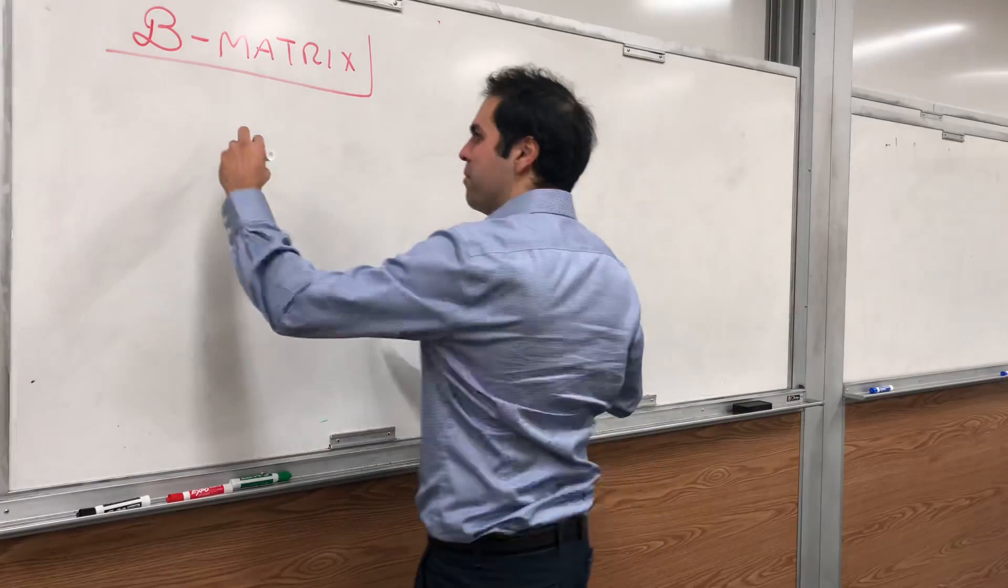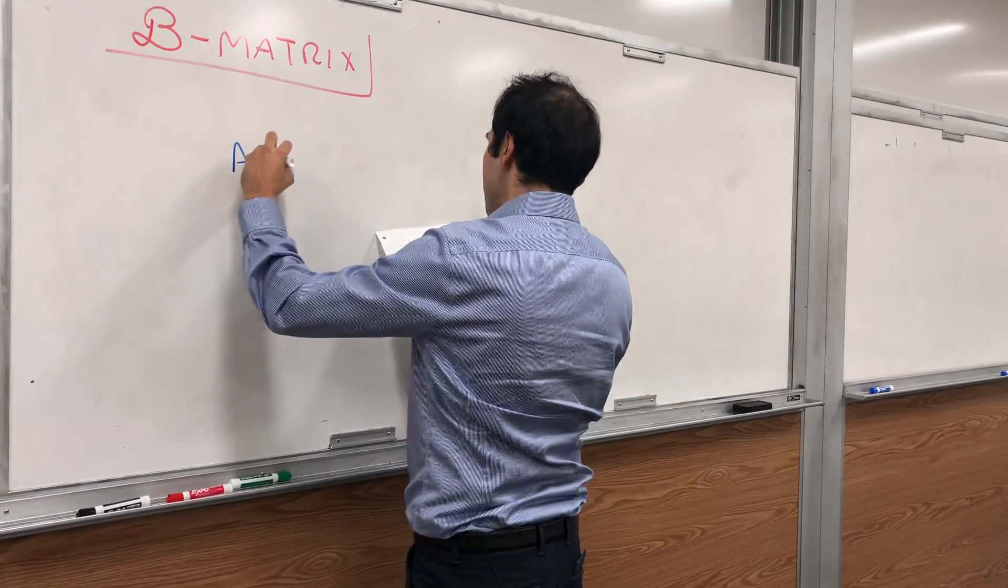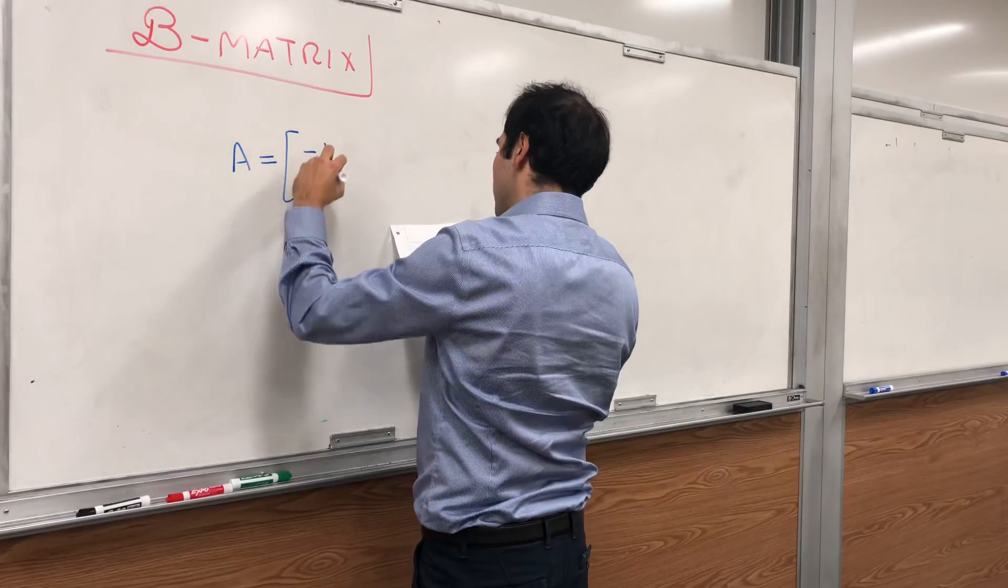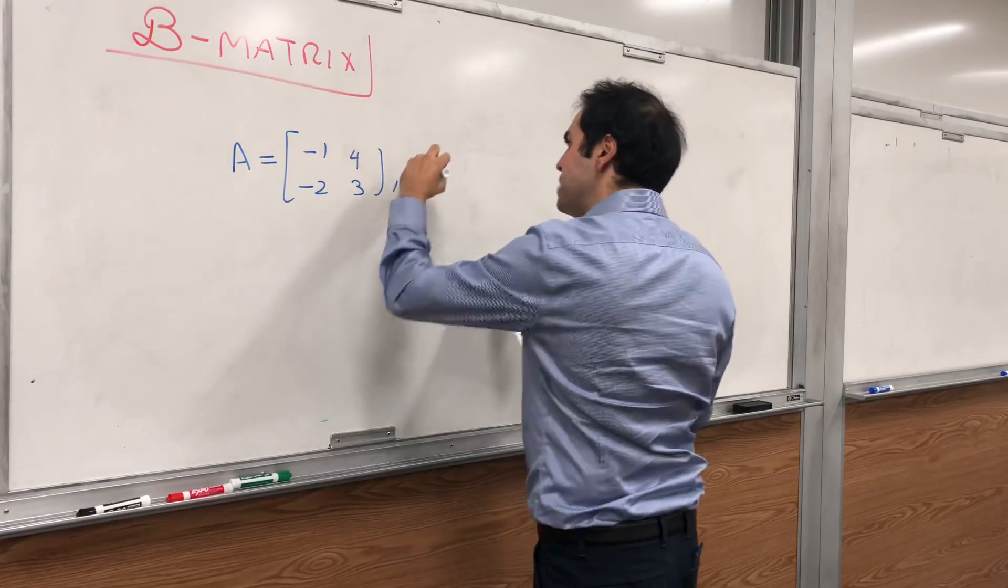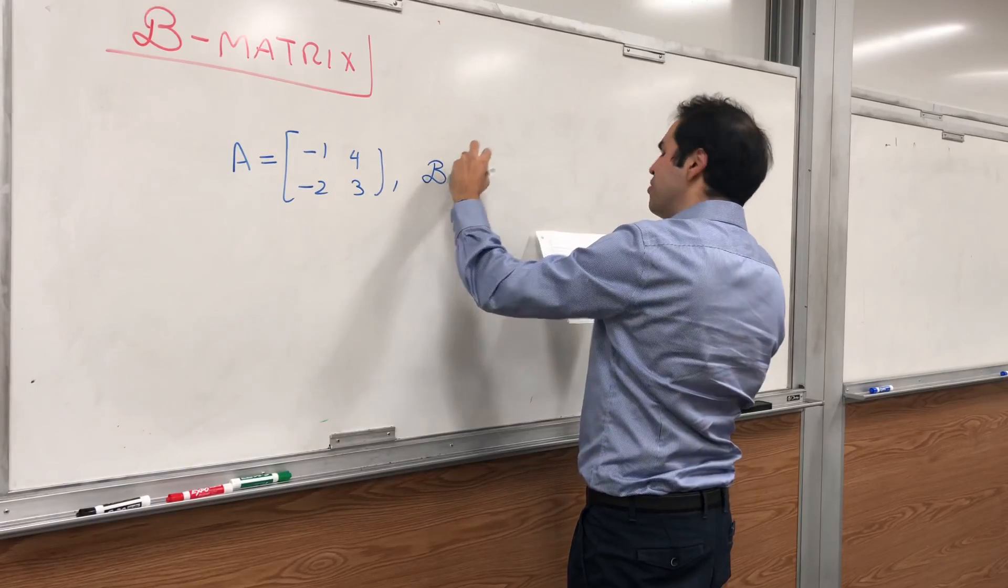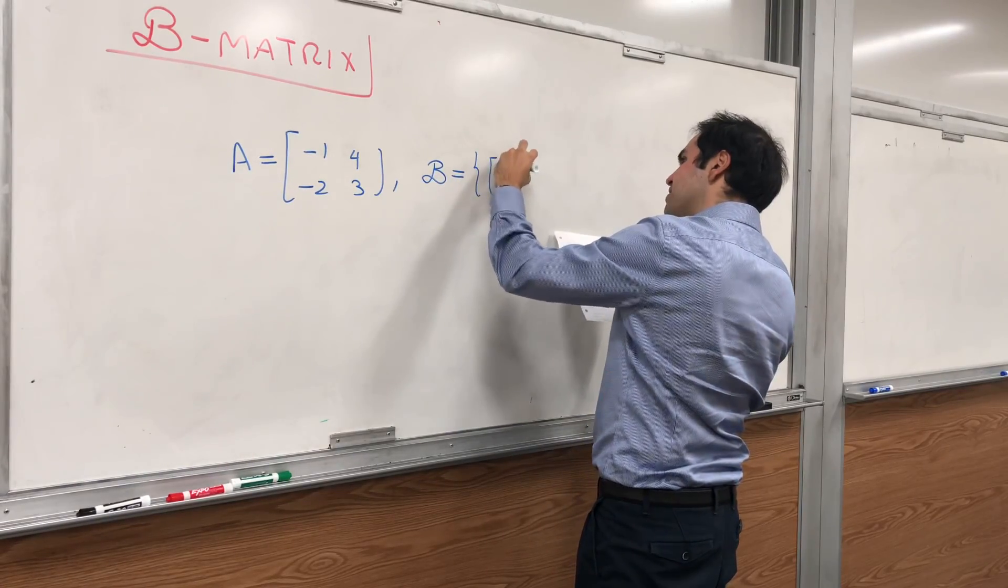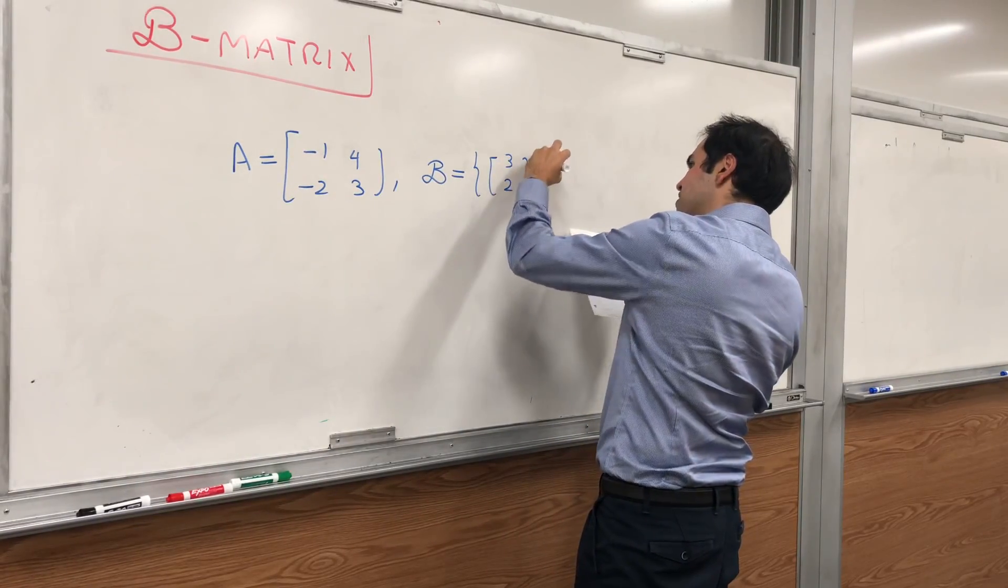Here's what I mean. So let A be the matrix [-1, -2; 4, 3], and B be the basis {(3, 2), (-1, 1)}.